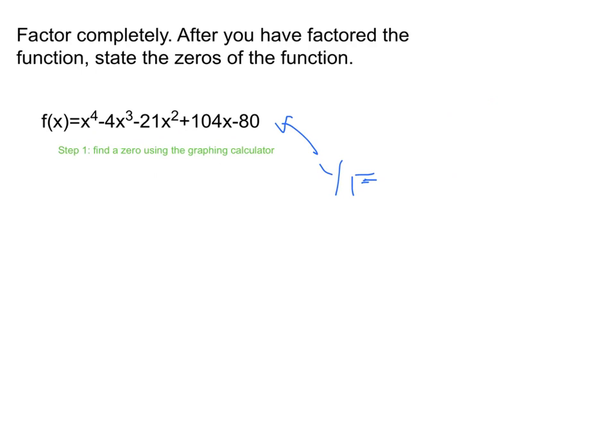So I see over here that I have a zero of 1. So now I'm going to do synthetic division with one. So we're going to put one in the box here and then the coefficients in front of that we find in front of our polynomial that we're dividing into. So the coefficient in front of x to the fourth is 1. The coefficient in front of x cubed is negative 4. Our x squared term has a coefficient of negative 21. Our x term is 104. And then our constant is 80.